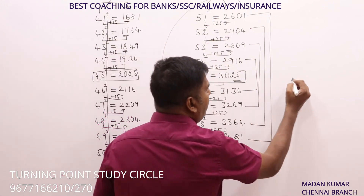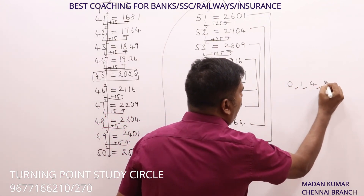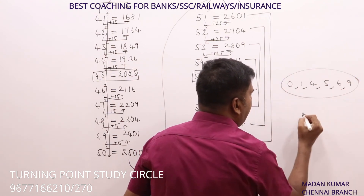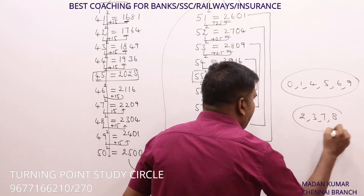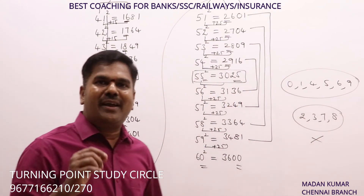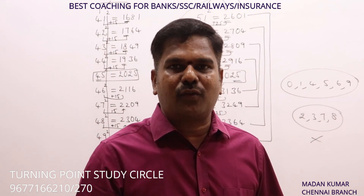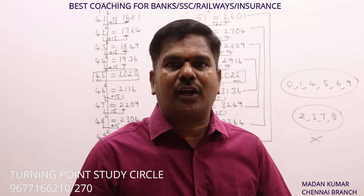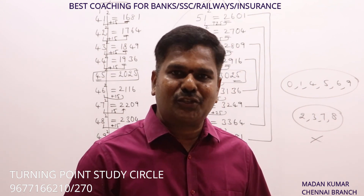Any perfect square number will end only with the digits 0, 1, 4, 5, 6, or 9. Whenever a number ends with 2, 3, 7, or 8, it is not a perfect square at all. In the next session, we will discuss 2-digit and 3-digit squares with shortcut methods. Thank you very much, friends and students.